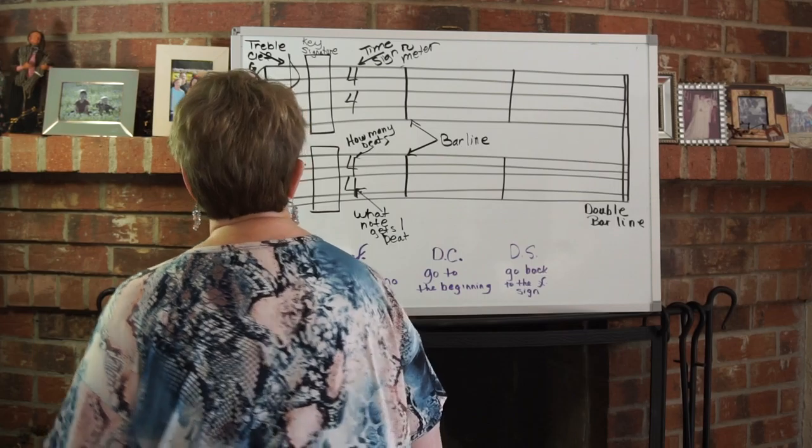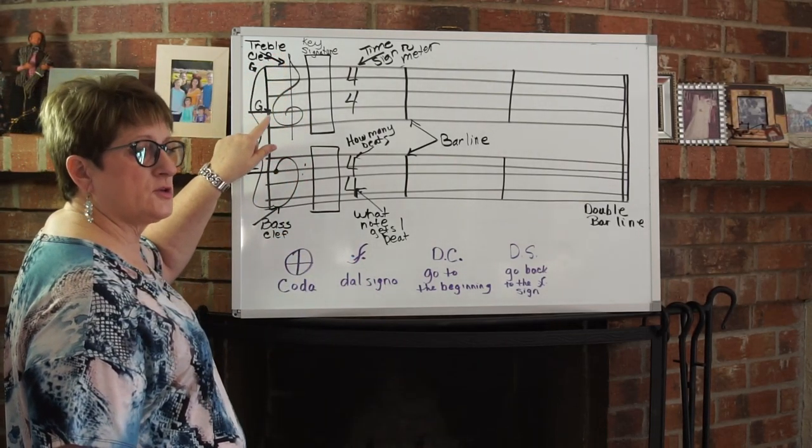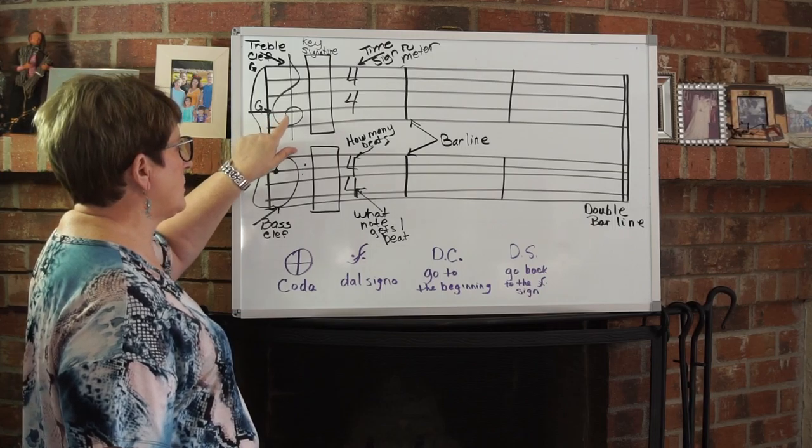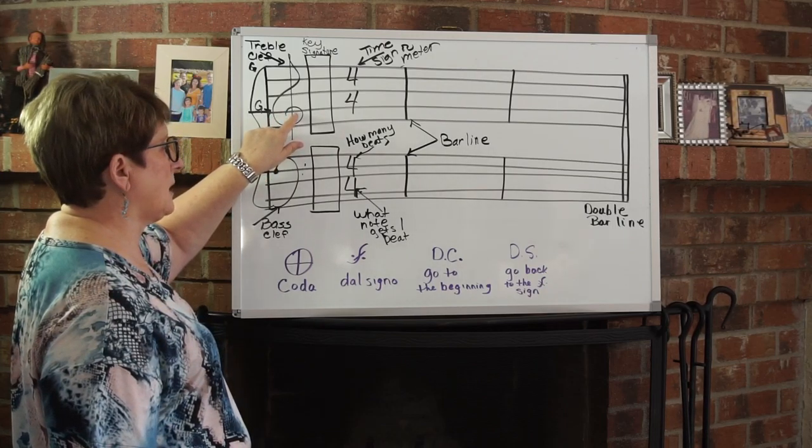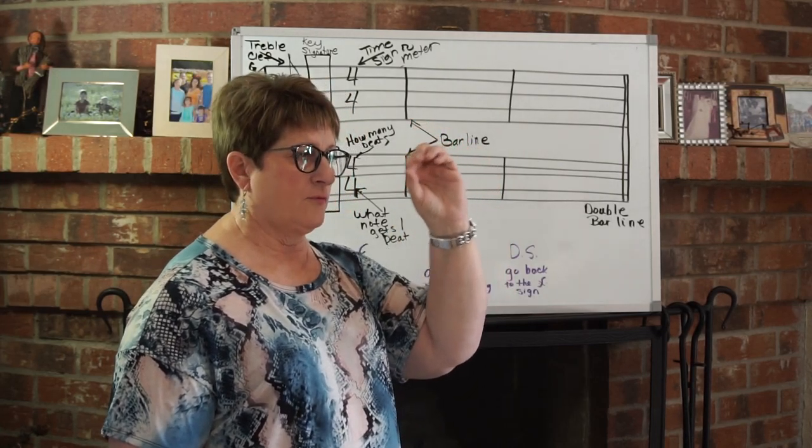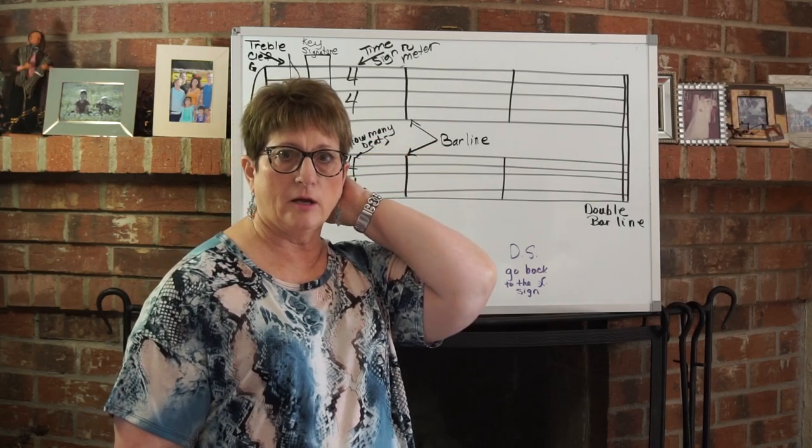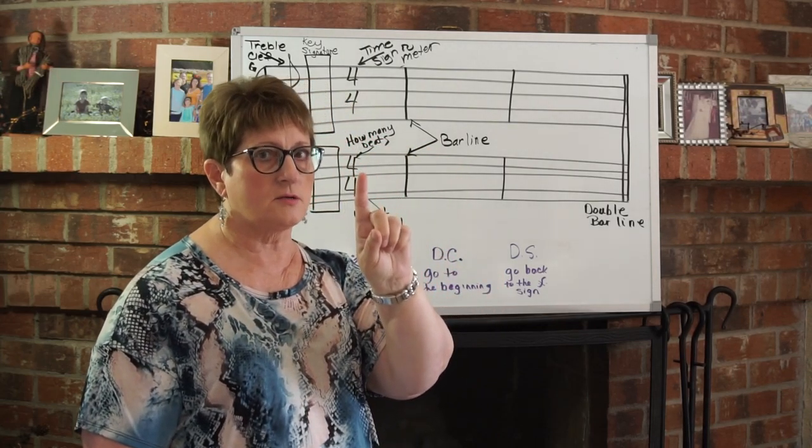So to review, this is our treble clef sign. It's also called the G clef because it wraps around this G line that helps us to have a reference point when we are trying to do lines and spaces. A, B, C, D, E, F, G in our music. You know where one is for sure.